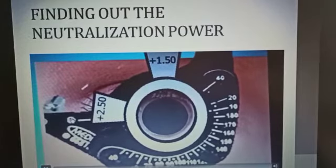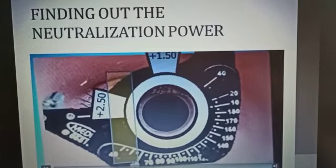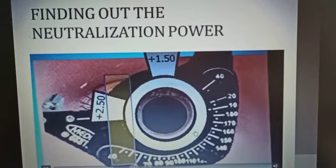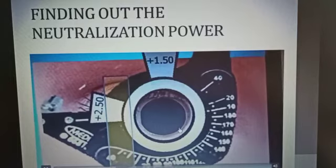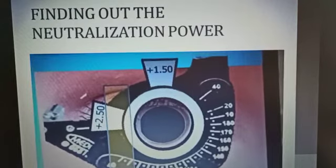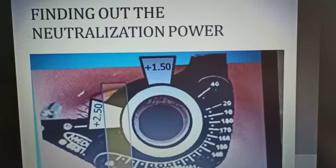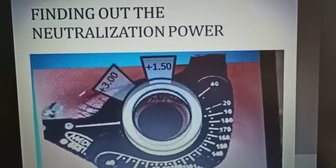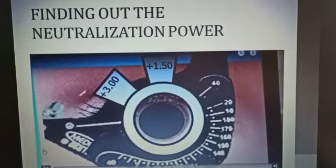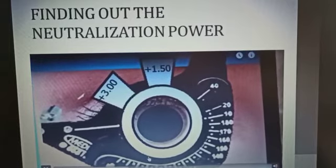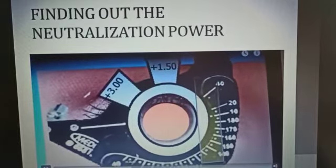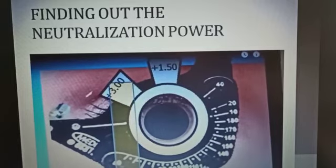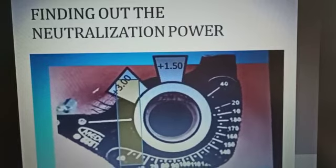Now let's proceed with plus 2.5. Here you can see the pupil reflex is almost filled, but not totally filled. So we haven't reached our neutralization point yet. We will proceed with a higher plus power. Now let's try with plus 3. Now let's see the reflex again. You can see the whole pupil is filled. We know that we have neutralized the vertical meridian with plus 3 spherical power.